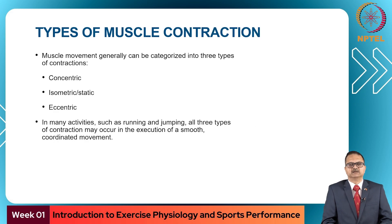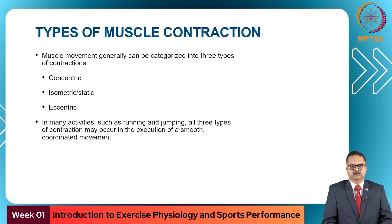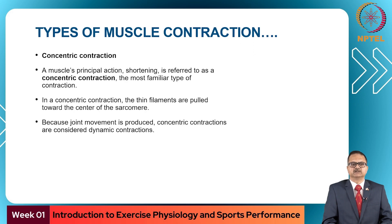Muscle movements can generally be categorized into three types of muscle contractions: concentric, isometric or static, and eccentric. In many activities such as running or jumping, all three types of contraction may occur in the execution of a smooth coordinated action.